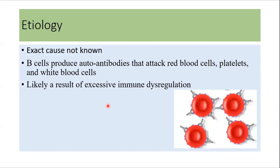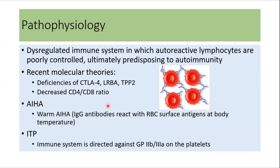Regarding etiology, the exact mechanism is not known, but B cells produce autoantibodies that attack red blood cells, platelets, and white blood cells, most likely related to excessive immune dysregulation. Recent molecular theories suggest Evans syndrome can occur due to deficiencies of CTLA4, LRBA, or TPP2, and can be associated with a decreased CD4 to CD8 ratio. In autoimmune hemolytic anemia, IgG antibodies react with RBC surface antigens at body temperature, and in ITP, the immune system targets glycoprotein 2b3a on platelets.